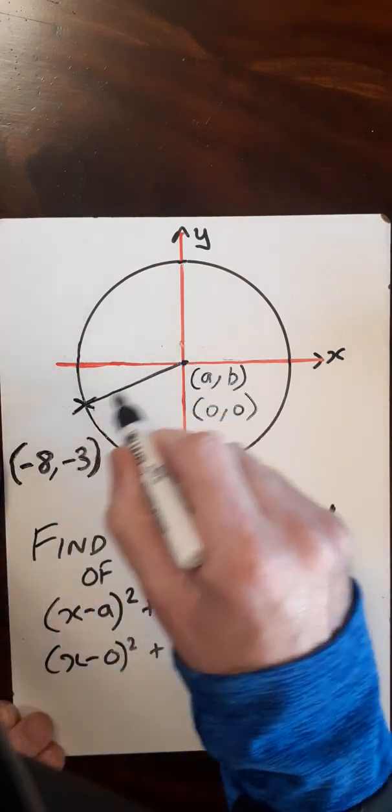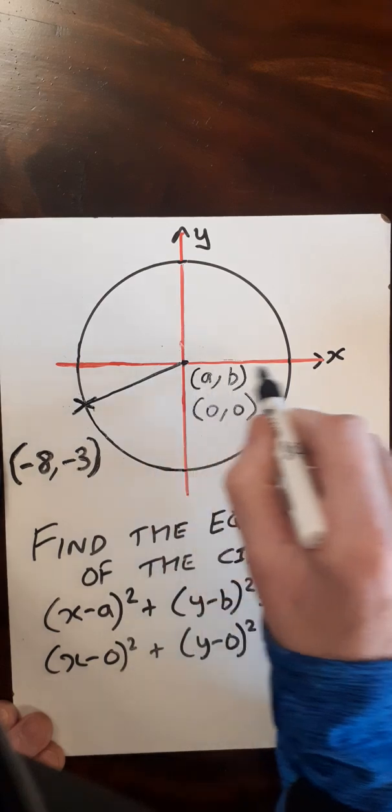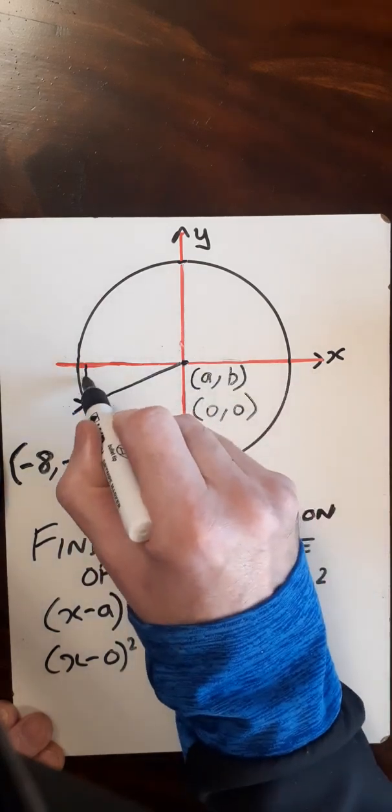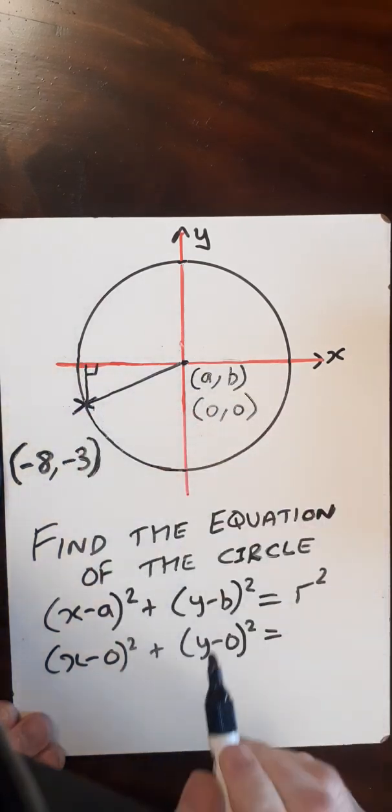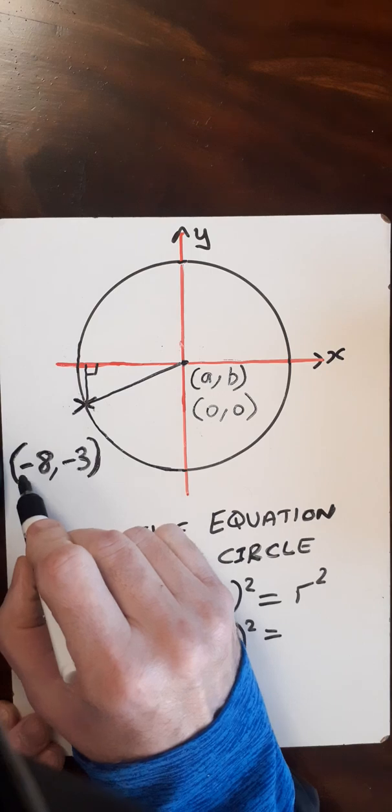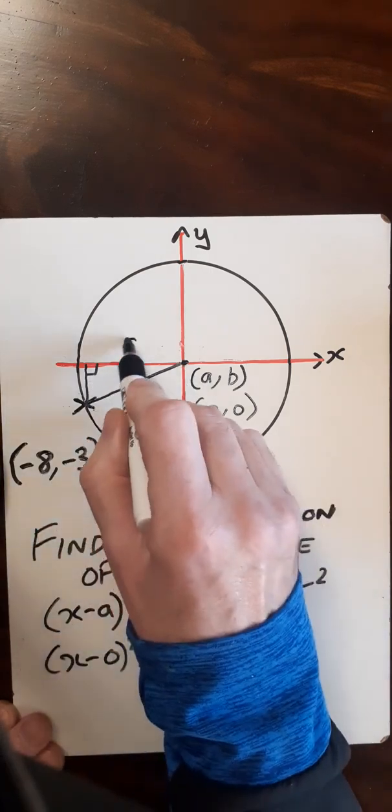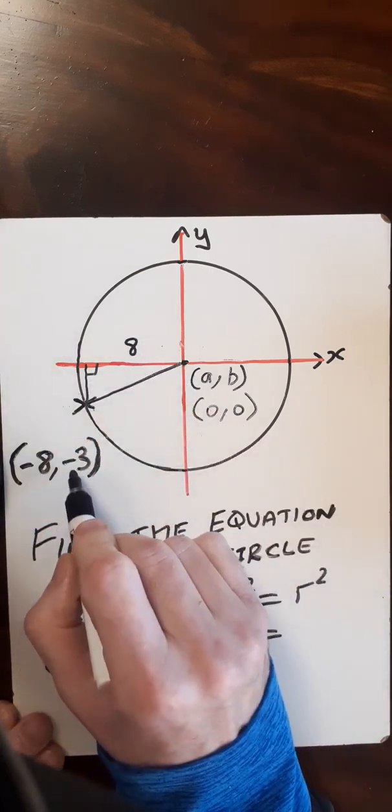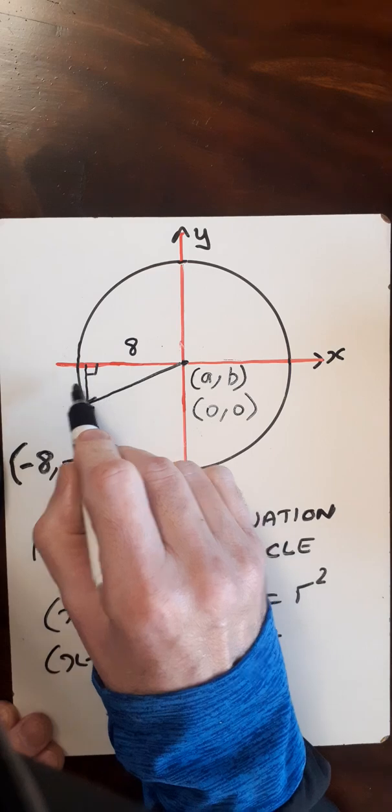So if I turn this line here, this radius line, using the axes into a right angle triangle. And then I can see that the length from here, as x is -8, from there to there is 8. And y is -3, so the length from here to here is 3.